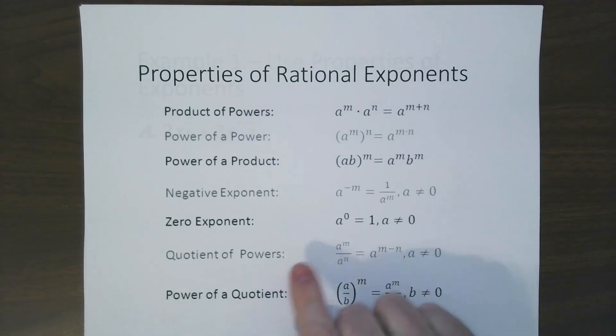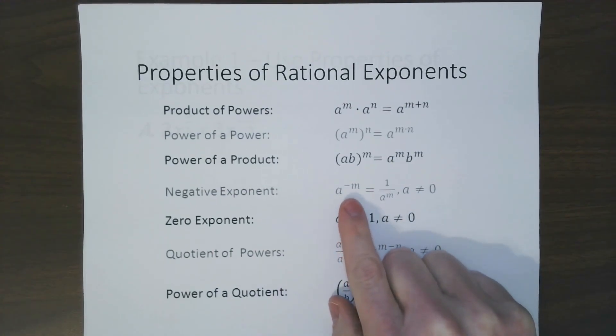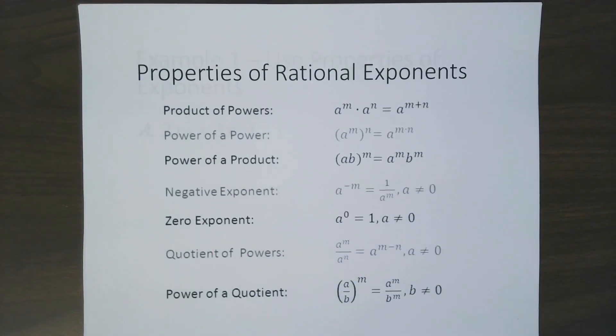When you do a division and quotient, that's when you subtract. The key thing is, if you have a negative exponent, it moves to the denominator. So that is a key thing to remember.